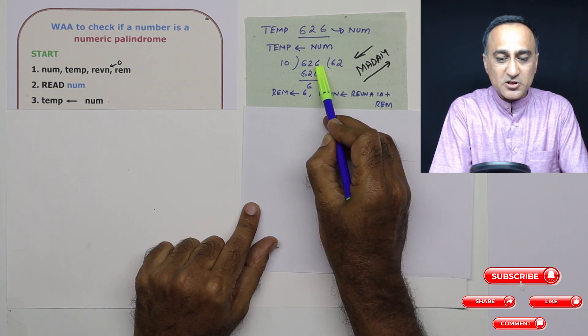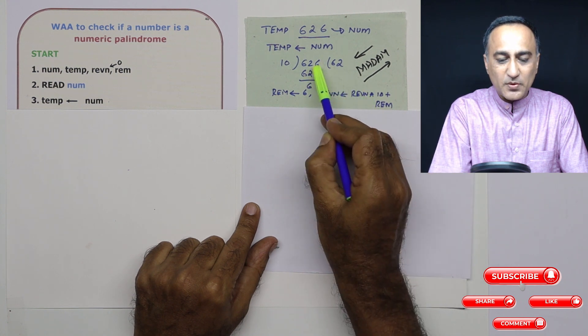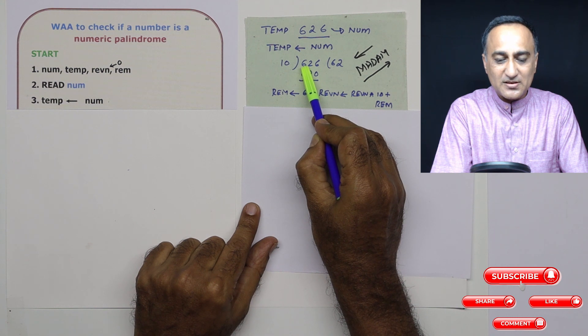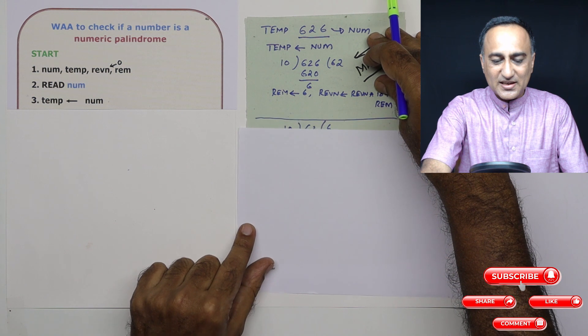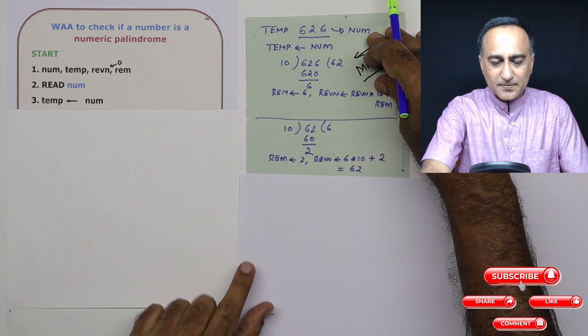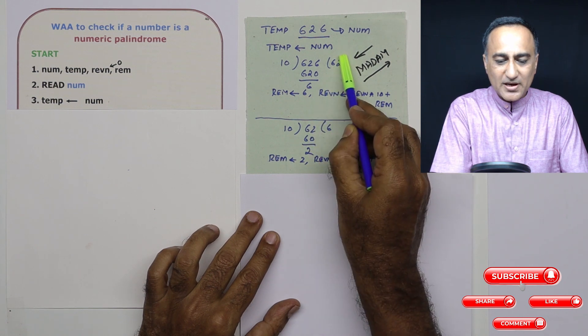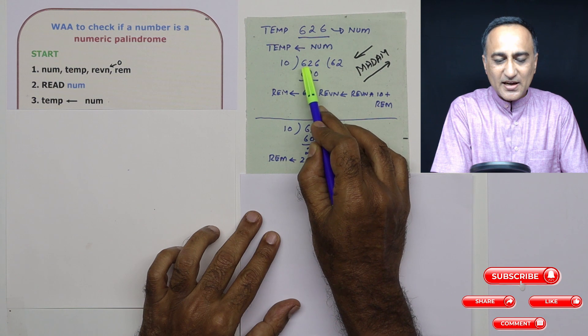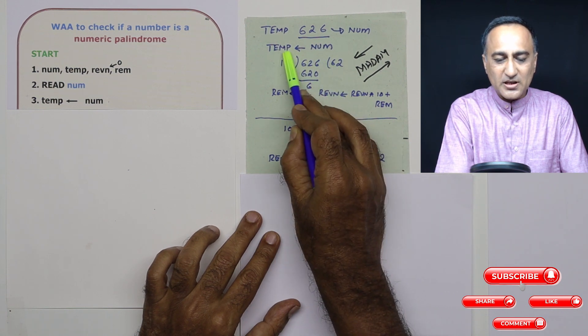Why we're multiplying reverse number by 10 and starting with zero is because if you look at 6, it's in the units position. When I get 2, I should multiply this reverse number for the tens position and finally the hundreds position. Now reverse number at this point is 6. Now I come back here. What I do is the number is 62 because I've only taken the quotient and given it to temp. That means if I take 626 and divide by 10, I get 62, so temp is now 62.